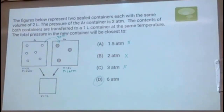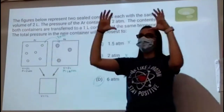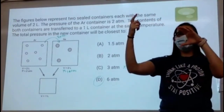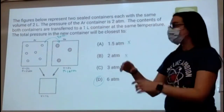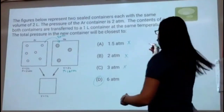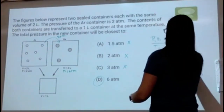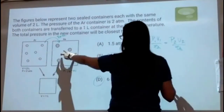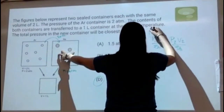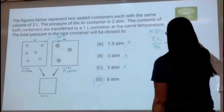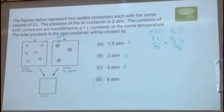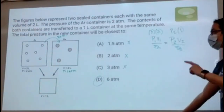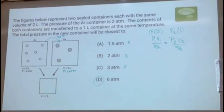You could also set it up with the combined gas law: P1V1/T1 = P2V2/T2 with temperature constant. With P1 = 3 ATM, V1 = 2 liters, and V2 = 1 liter, solve for P2. This question looks at two things: partial pressures and changing the size of the container.